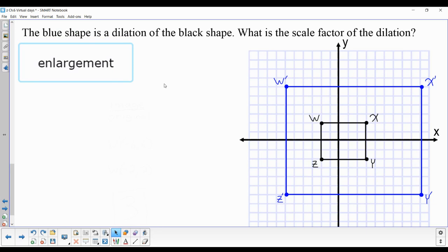When you have an enlargement, it means your dilation is larger than 1. If you had a reduction, that would mean the dilation was less than 1, usually written as a fraction.